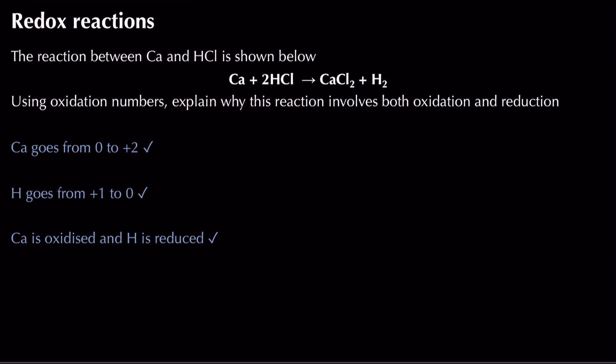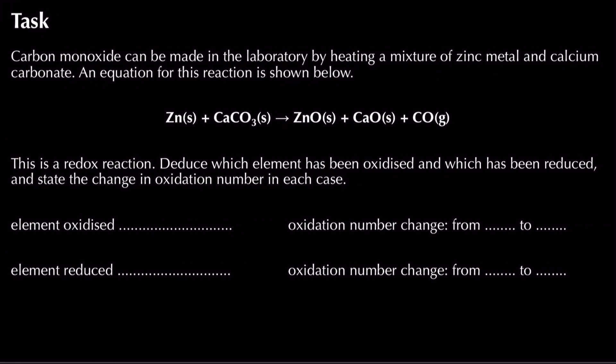You can also be given a reaction and asked, using oxidation numbers, to explain why it involves both oxidation and reduction. Remember oxidation numbers are the same as oxidation states. Calcium goes from zero to plus two — it is oxidised. Hydrogen goes from plus one to zero — it is reduced. That approach can gain you three marks in a redox question.